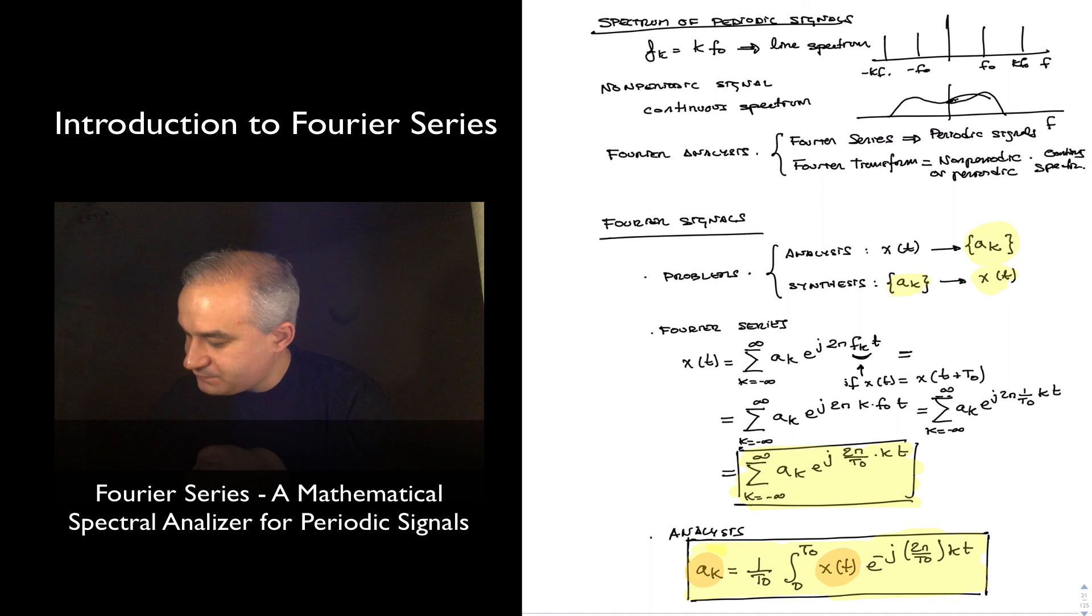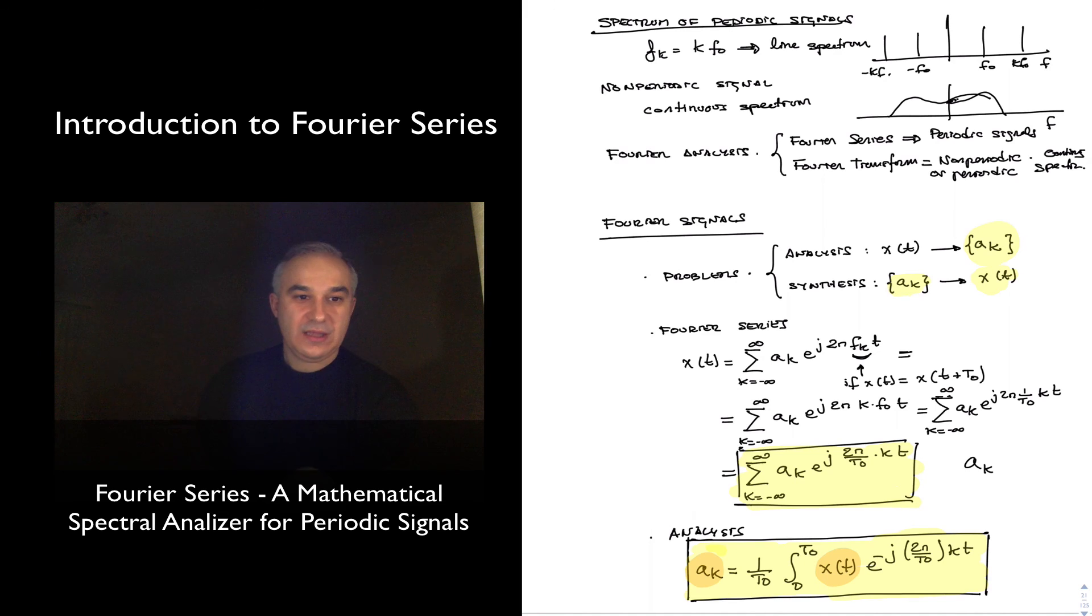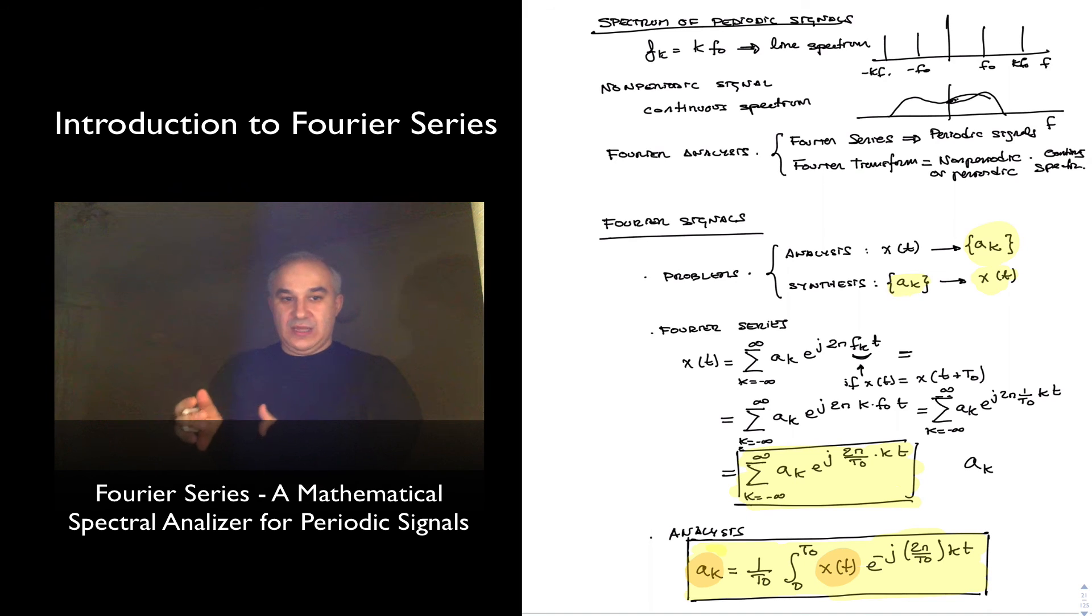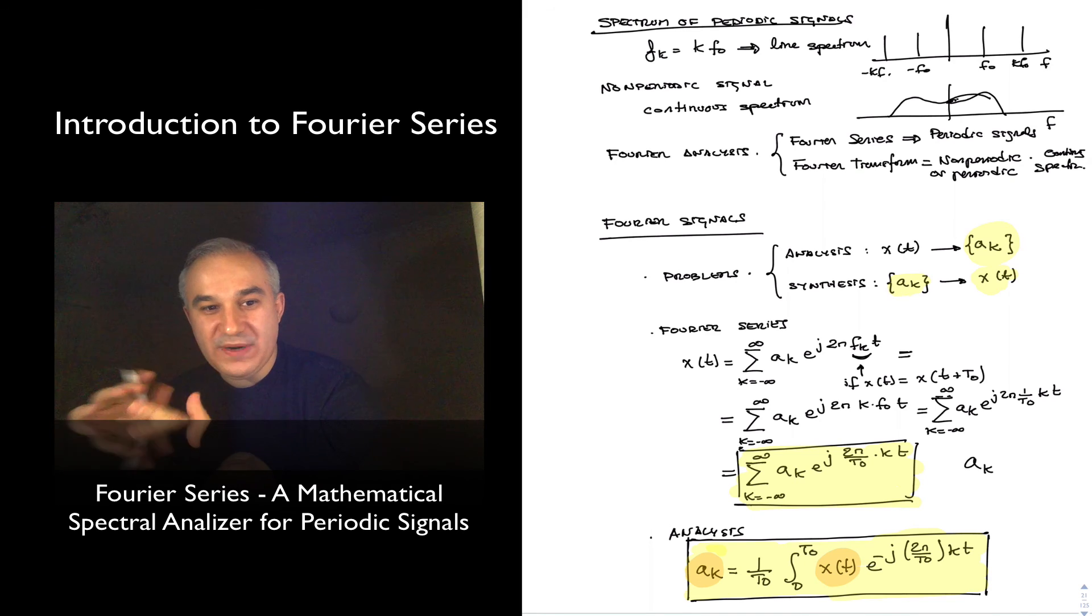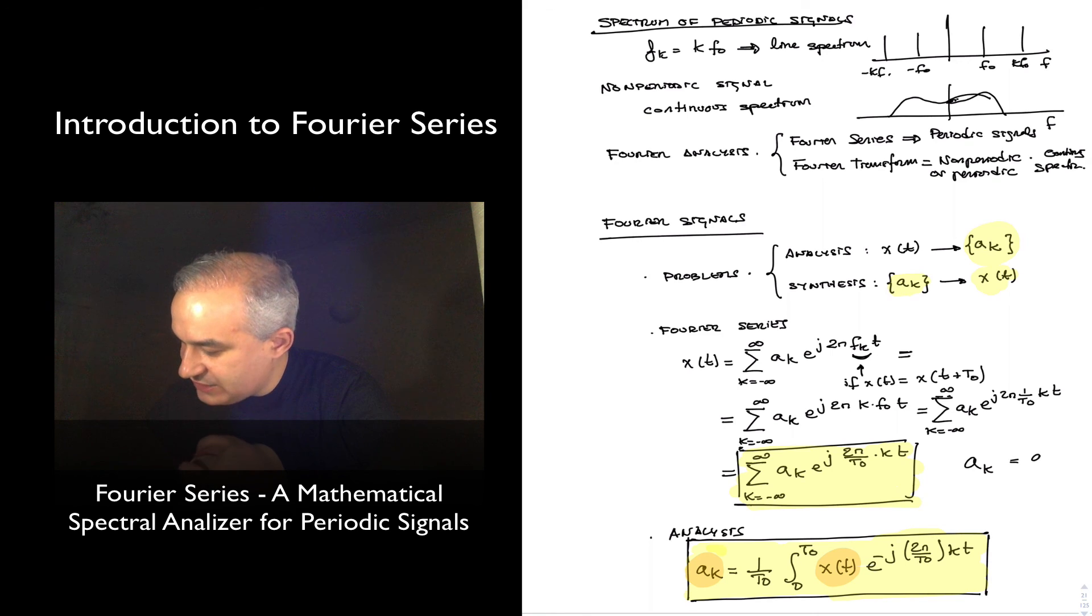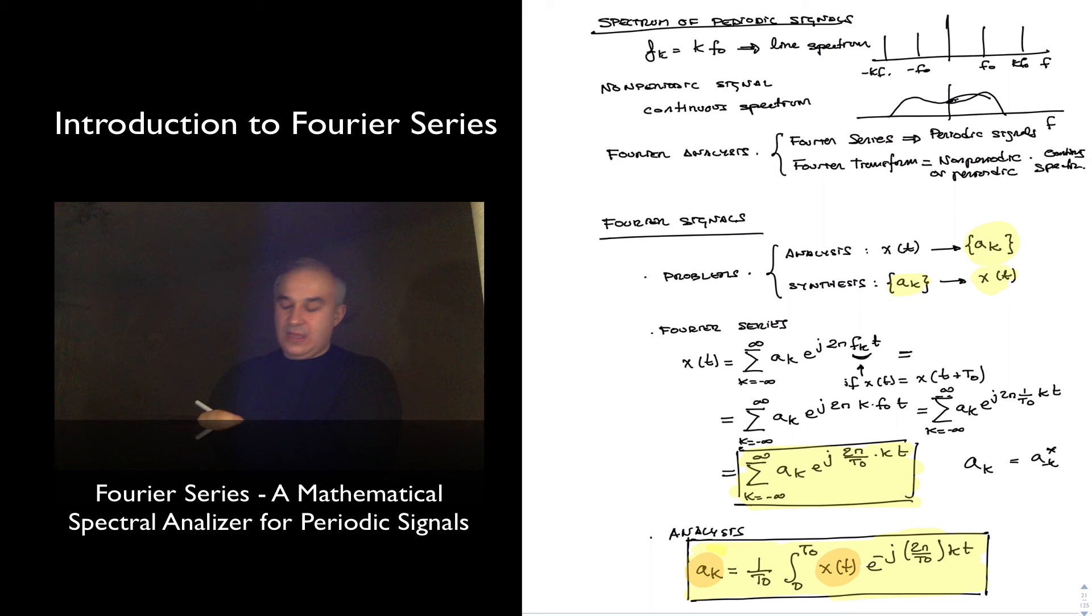Now, you're going to see that these a_k's, for real signals, they are complex conjugates, the positives and the negatives, right? So, you're going to see a_k with a minus there.